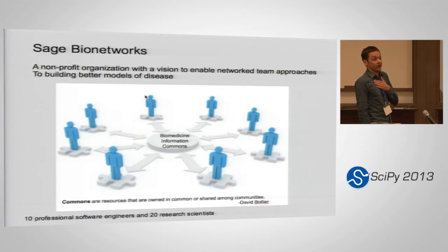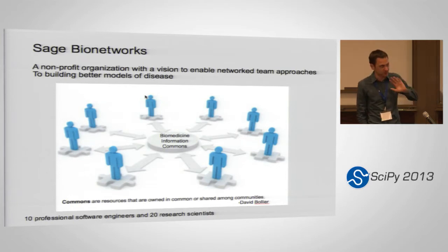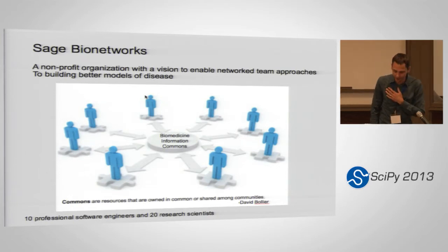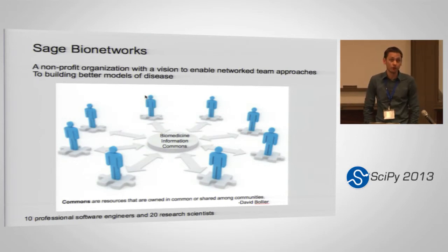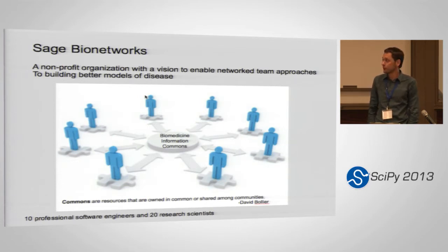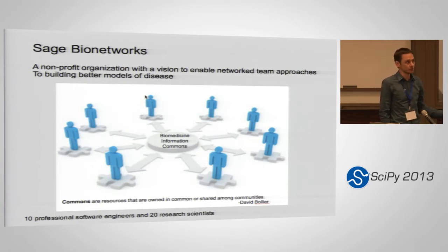So why do I care about this? Well, I care about it because I work at Sage — Sage Bionetworks, because shortening it to Sage just makes it very confusing at a Python conference. We're a non-profit based in Seattle and we have as a broader goal to enable collaborations and network approaches to doing biology. The end goal is always trying to build better models of disease and helping patients, so we're totally focused on the idea of biomedicine.